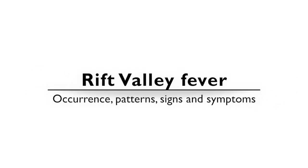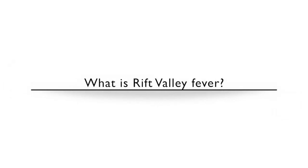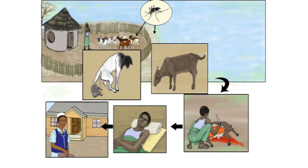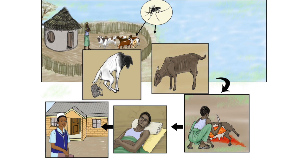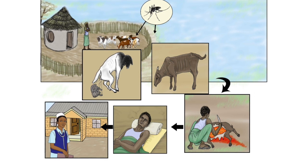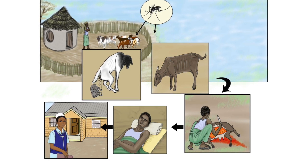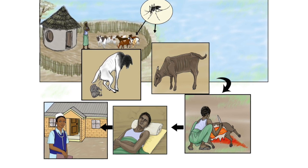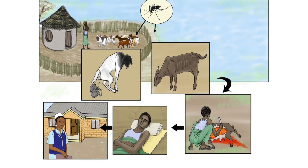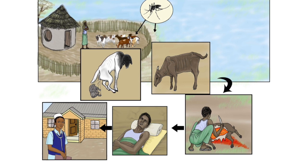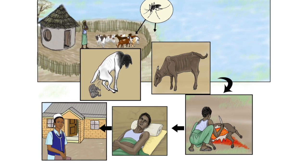Rift Valley Fever – Occurrence Patterns, Signs, and Symptoms. What is Rift Valley Fever? Rift Valley Fever is a viral disease that affects sheep, goats, camels, and cattle, resulting in abortions and deaths in young animals.